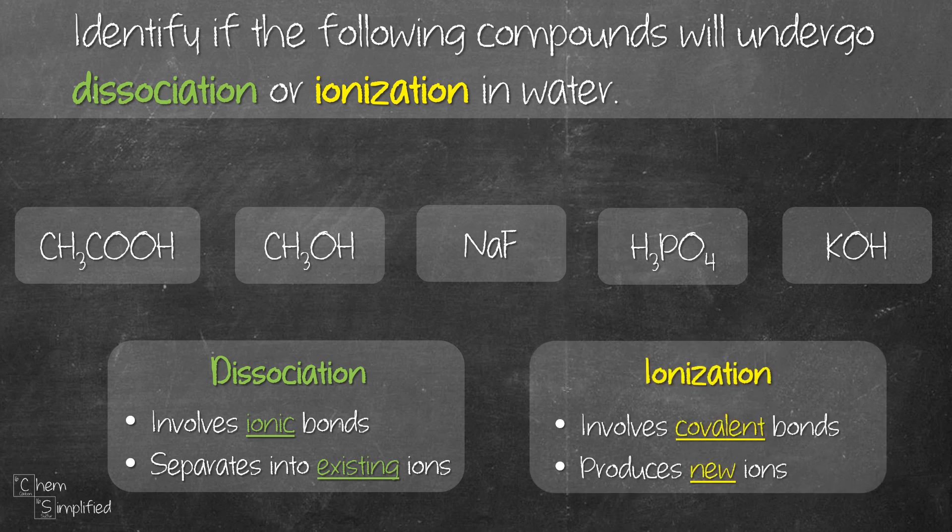The first thing we need to do is find out the type of compound each of these are, whether they are ionic or covalent. Feel free to pause the video and figure it out on your own first. We can continue when you're ready.